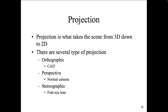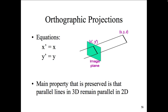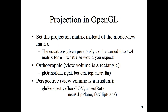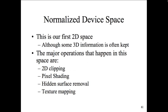We talked about projection — taking a 3D scene and breaking it out into a 2D scene, since our flat display monitors are 2D but we're modeling in 3D. We looked at different types: orthographic, perspective, and stereographic projections, as well as normalizing the device space. Coming up next: 2D clipping, pixel shading, hidden surface removal, and texture mapping.